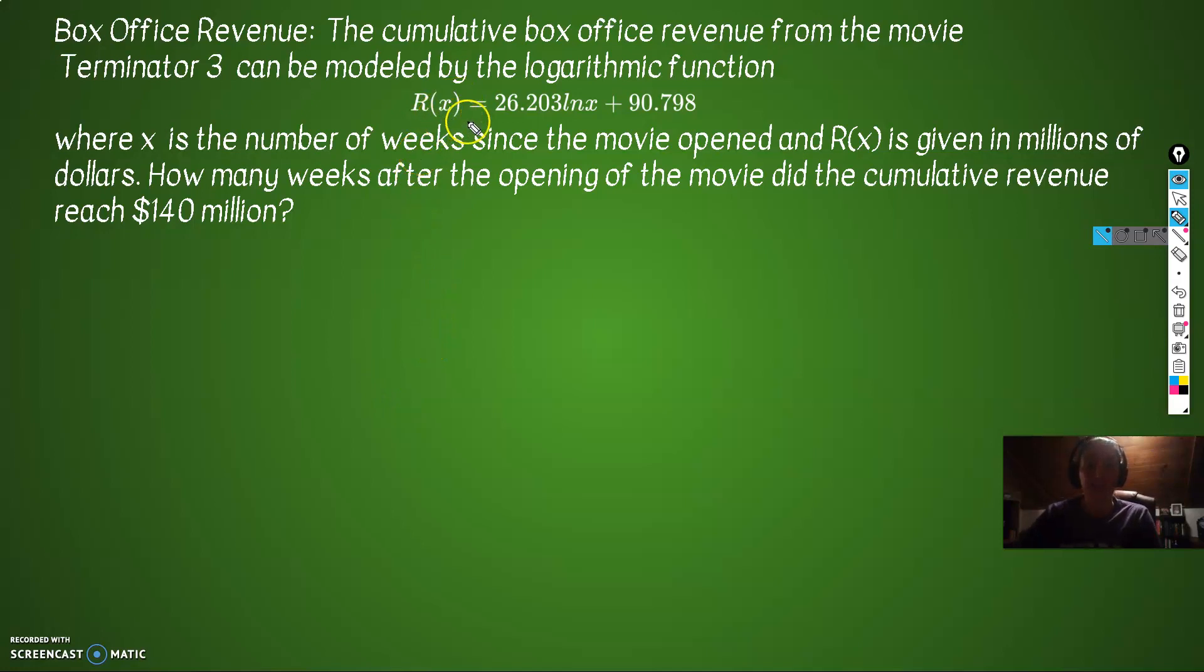So Terminator 3, the revenue is modeled by this equation here, similar to Finding Nemo, where x is the number of weeks since the movie opened, and R(x) is in millions. How many weeks after the opening of the movie did the cumulative revenue reach 140 million? Okay, so R(x) equals 140 million. 140 = 26.203 ln(x) + 90.798. So let's start clearing out clutter.